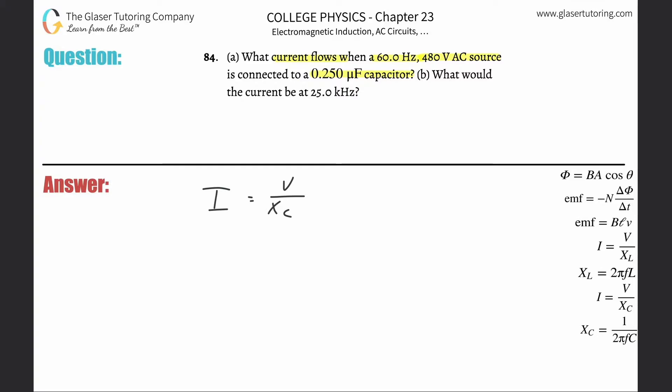So what we now need to know, in order to find the current, we need to know the voltage and we need to know the reactive capacitance. They told us the voltage, that's straightforward. It was 480 volts, but they didn't tell us the reactive capacitance. So how is capacitance here and frequency related to reactive capacitance?